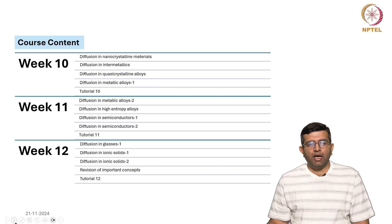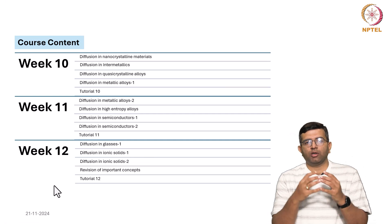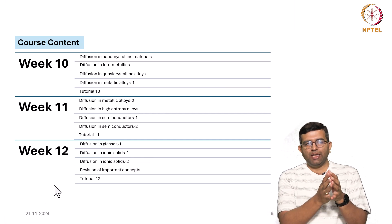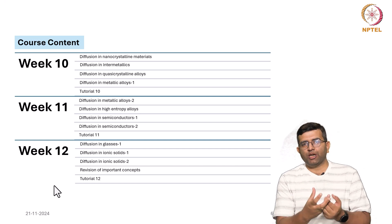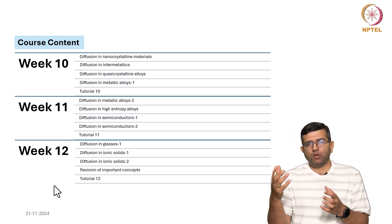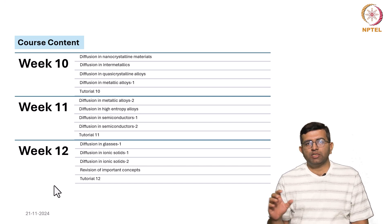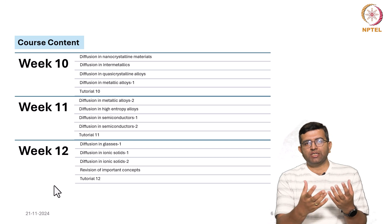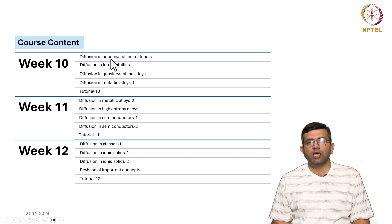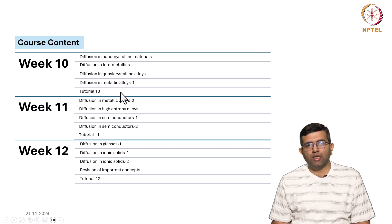And in the last three weeks or so, I want to talk about diffusion in specific classes of materials, which is very important in a sense that these different classes of materials are useful for various technological applications. And therefore, it is important that we understand how the diffusion proceeds in these materials. We have coverage from nanocrystalline materials, intermetallic, quasicrystalline alloys, metallic systems,